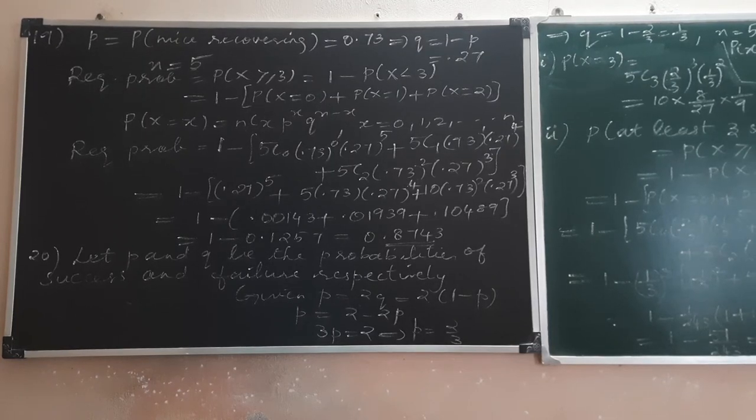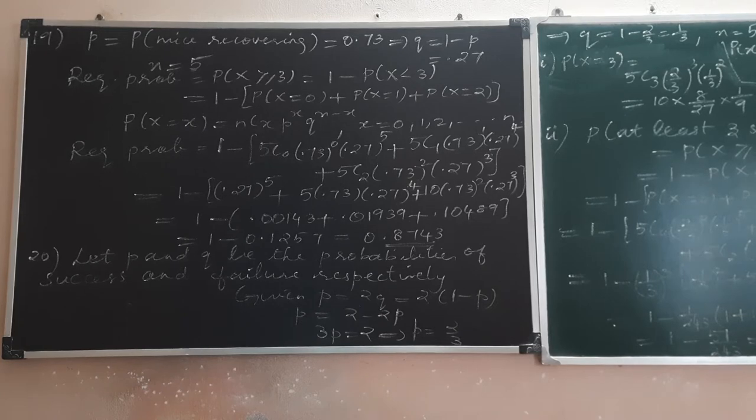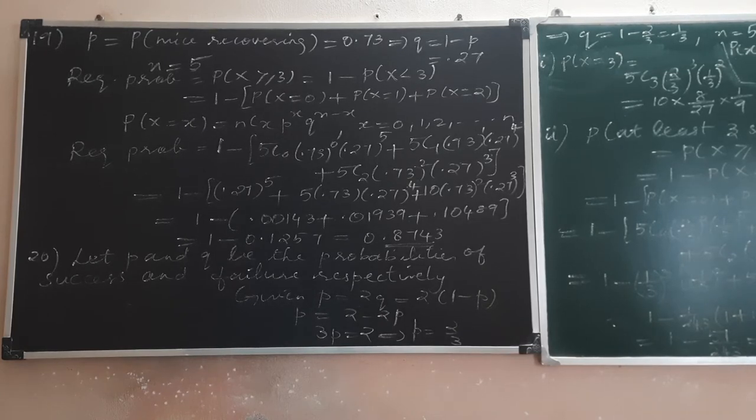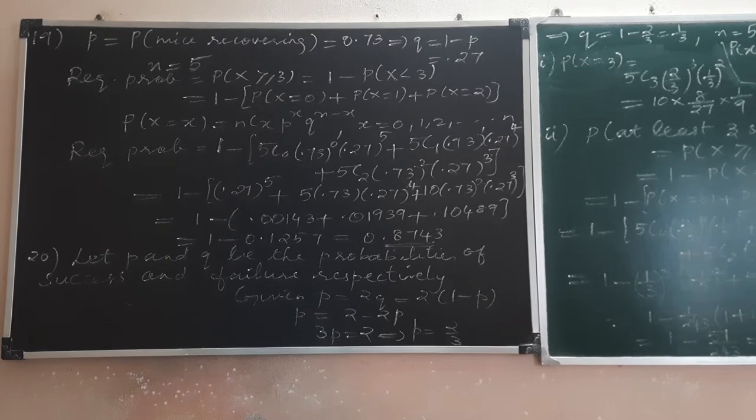We now move on to the last two sums of binomial distribution, that is the first exercise in the 7th chapter. The 19th question is like this.